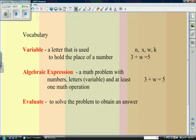A variable is just a letter, and it can be any letter. And it holds the place of a number. So we have n, x, w, k. Pick w, and we write 3 plus w equals 5. Well, that's actually an equation because of an equal sign, but 3 plus w would be the expression.